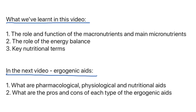To recap what we've learned: we can now understand the role and function of the macronutrients and micronutrients, understand the role of energy balance, and define key nutritional terms. Moving into the next video we're going to begin looking at ergogenic aids — understanding what pharmacological, physiological and nutritional aids are, and the pros and cons of each type.